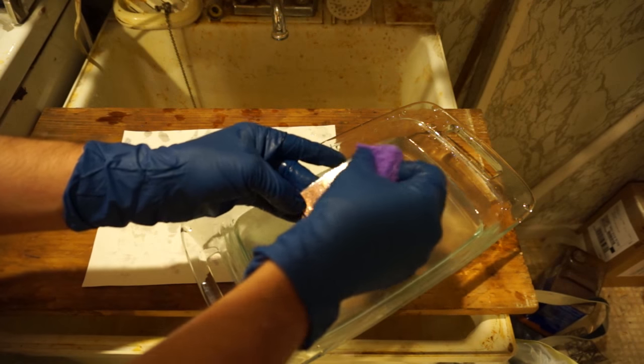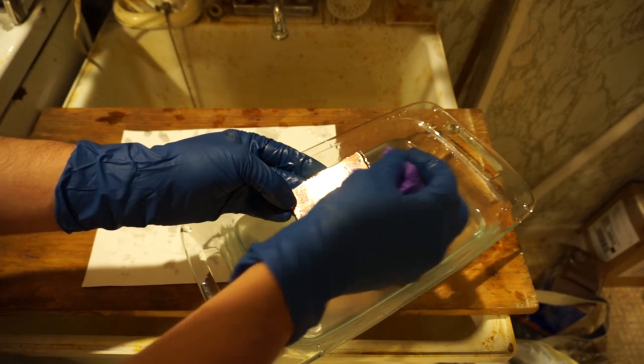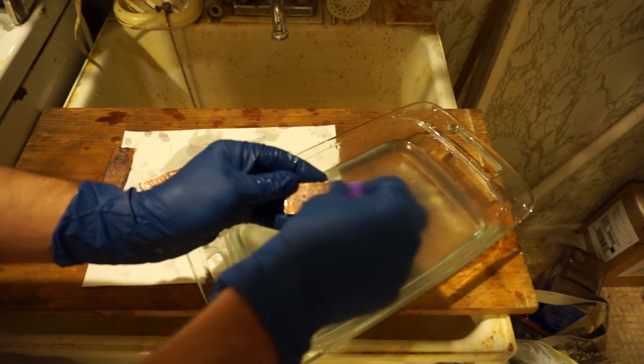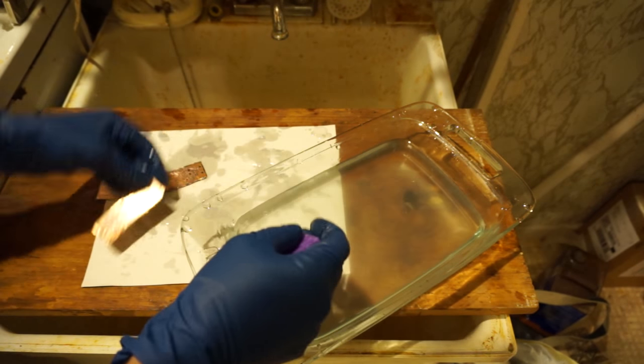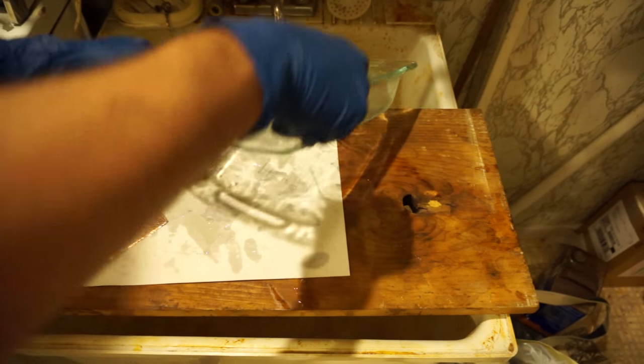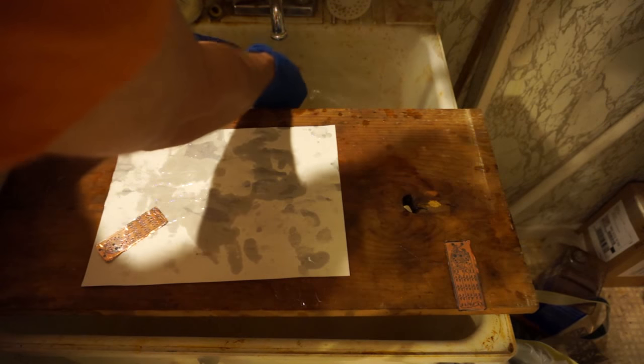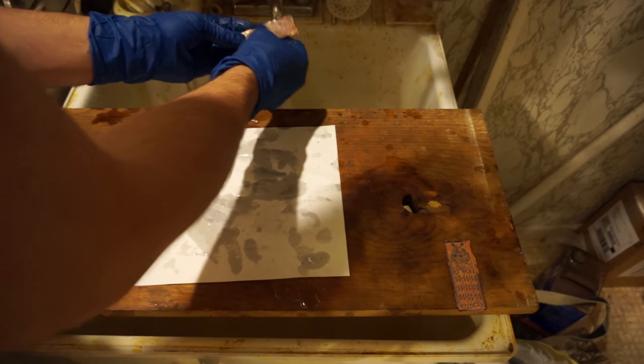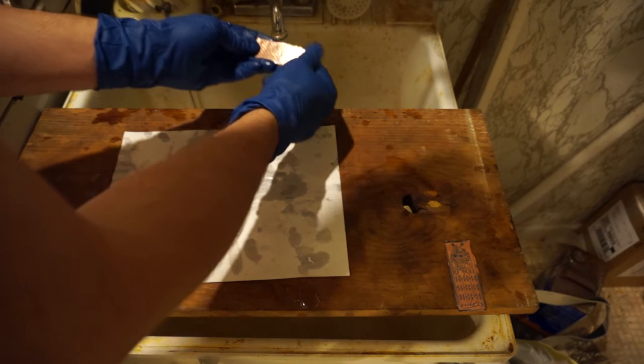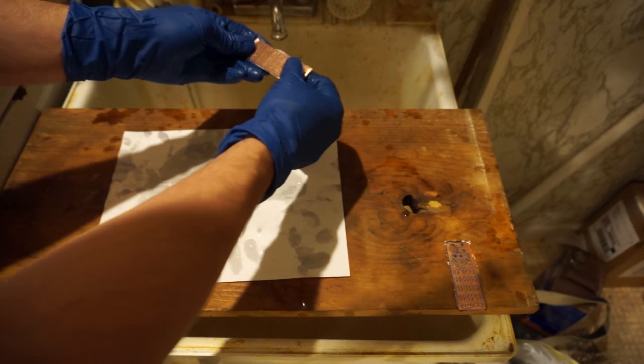What this does is anywhere that the Riston is still a gel, it just washes away. It just wipes away. But anywhere that the Riston has been exposed to the UV light, so anywhere that's clear on the mask, it's turned into a plastic which the sodium carbonate will not eat through.